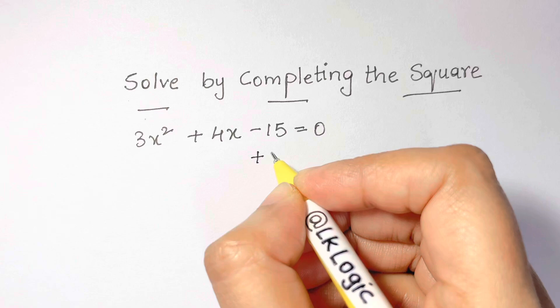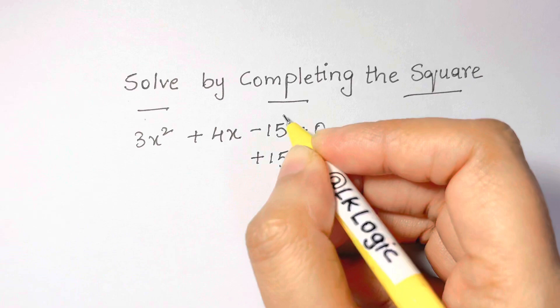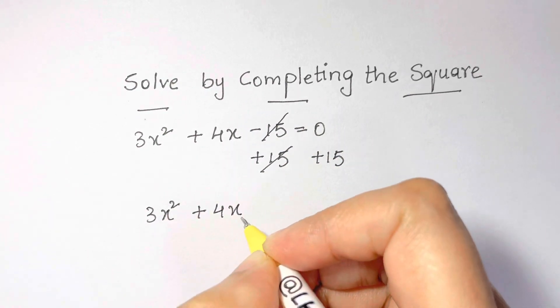So I'm going to add 15 on both sides like this. What happens next is this thing is gone and we get 3x² + 4x = 15.